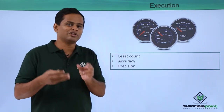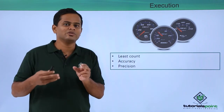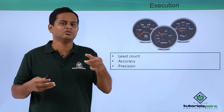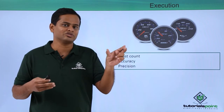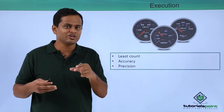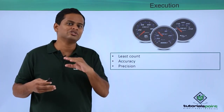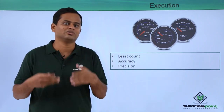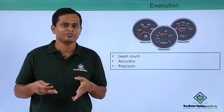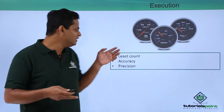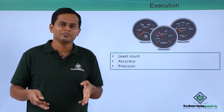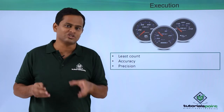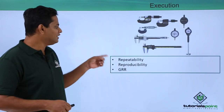Accuracy means how correct a particular measured value is relative to the real value. Precision means how consistently we are hitting the same value when we repeat the measurement. All of these play a very important role when we are evaluating a measurement system.